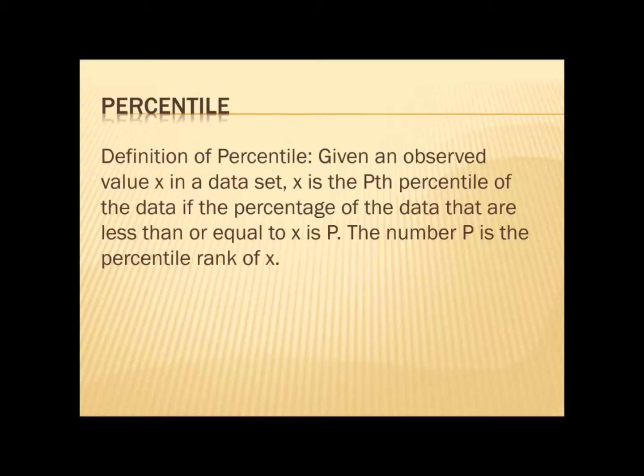Let's look at some definitions. What is a percentile? Given an observed value X in a data set, X is the Pth percentile of the data if the percentage of the data that are less than or equal to X is P. The number P is the percentile rank of X.